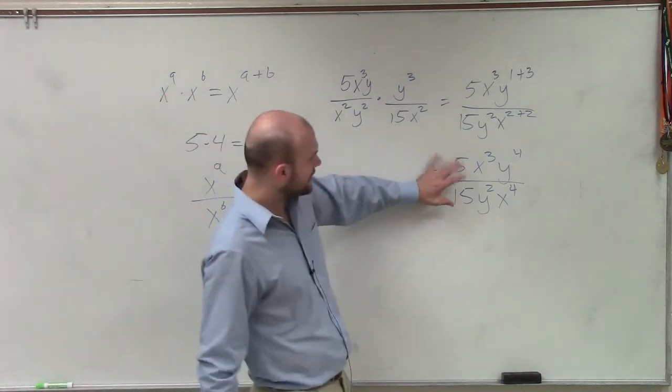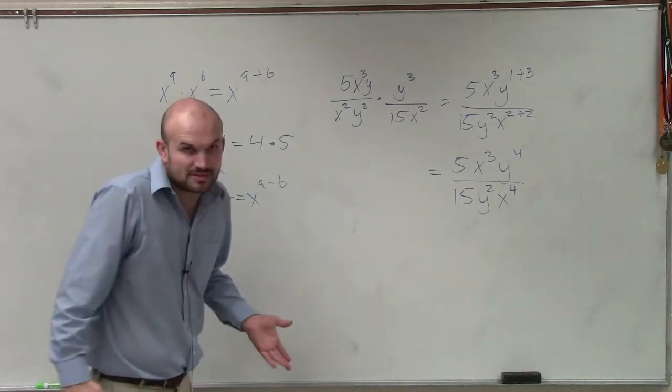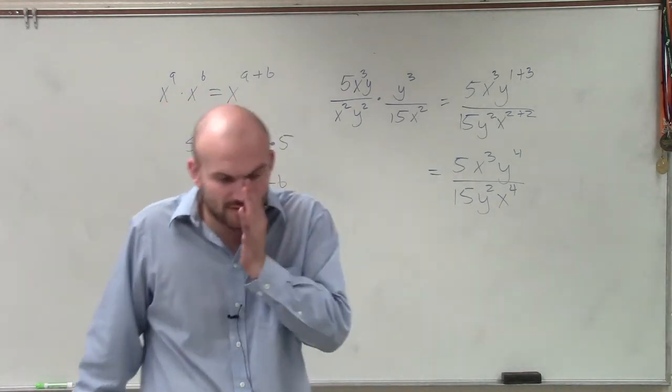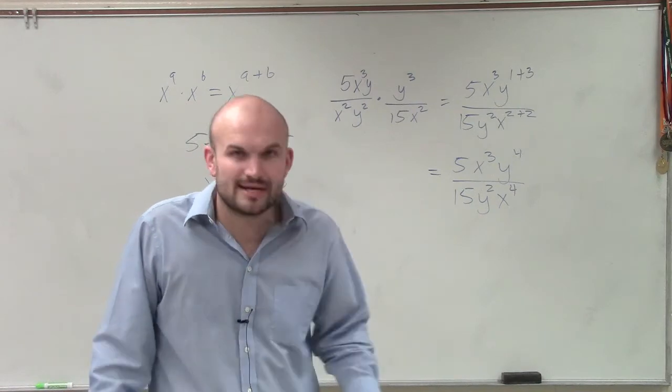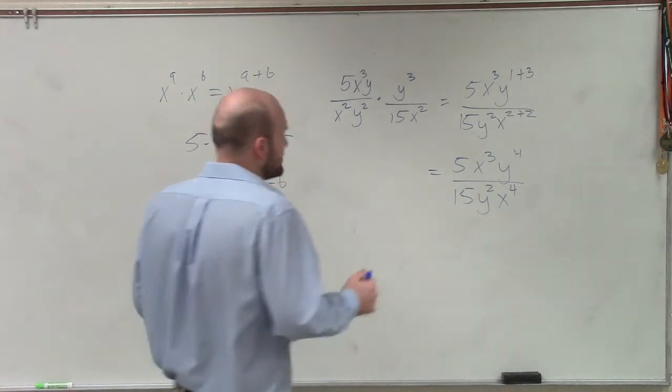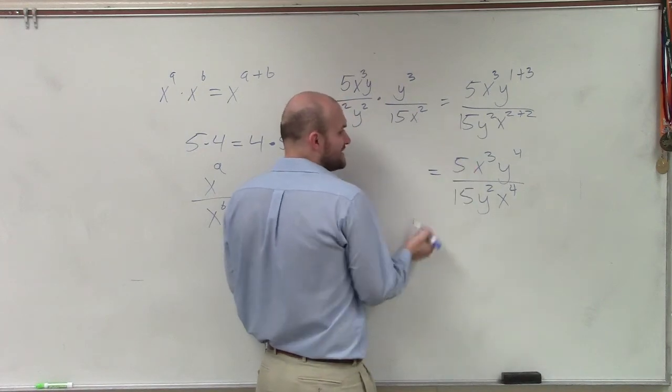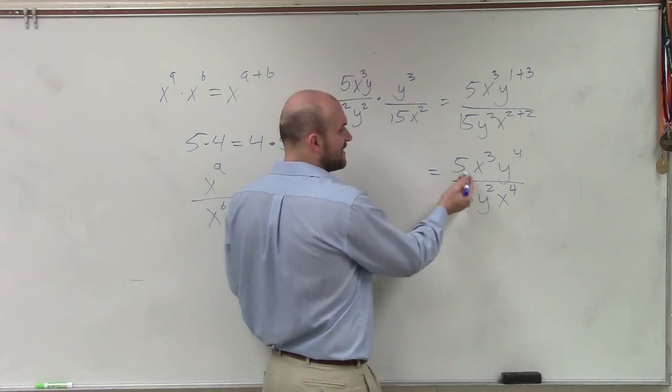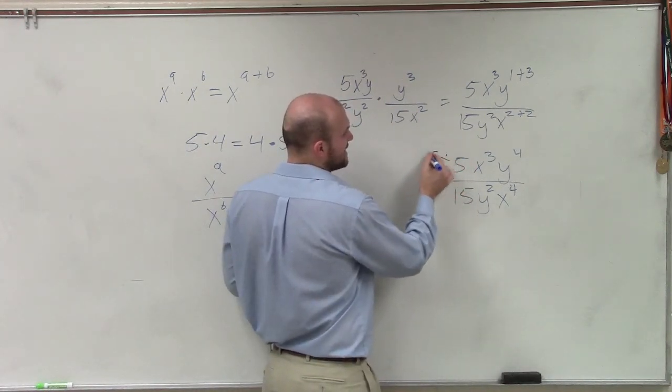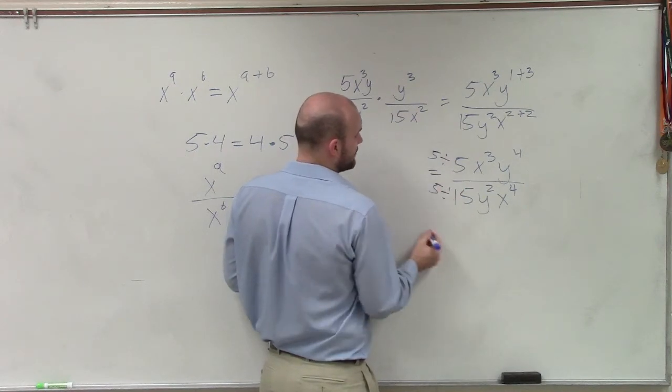Right? So now here, I have my numbers. And a lot of people go, oh, 5 over 15, that's 3. But we've got to remember, what we're trying to do is we're trying to simplify this. Right? 15 doesn't divide into 5. But I can simplify this by dividing by a 5 on the top and on the bottom. And when doing that, I get 1 third.